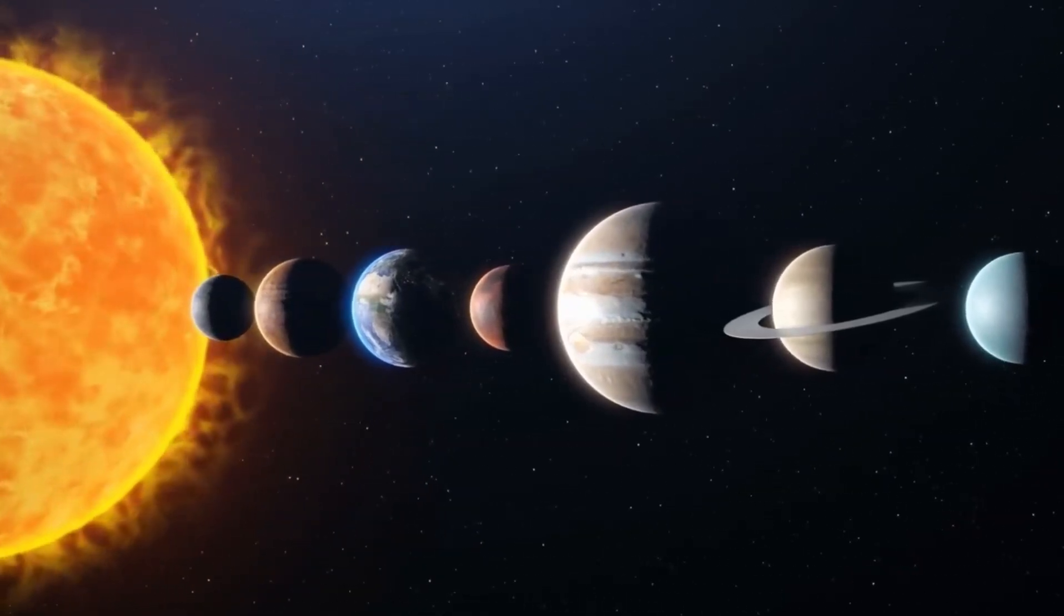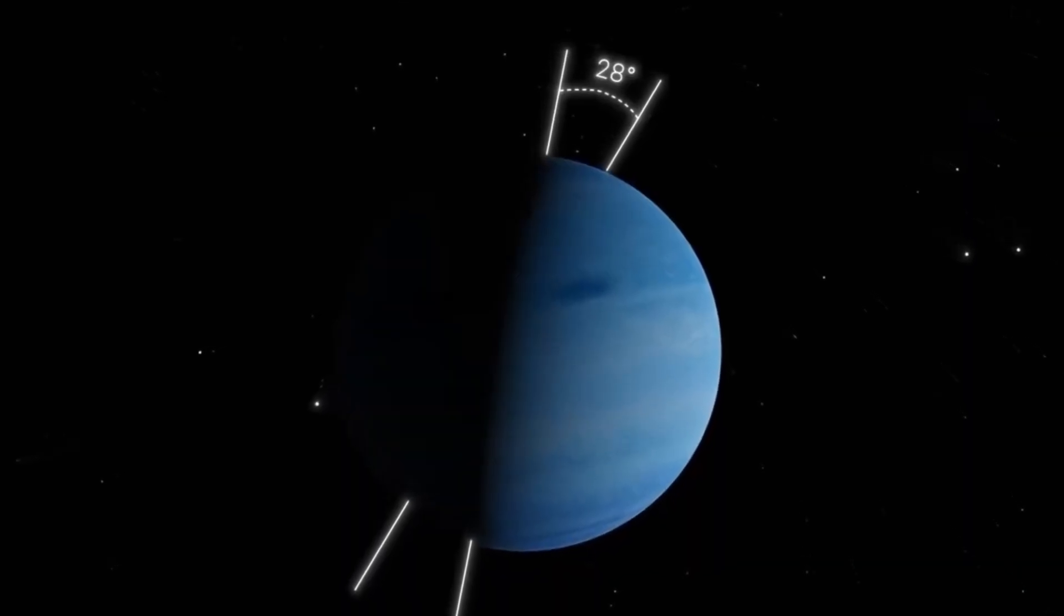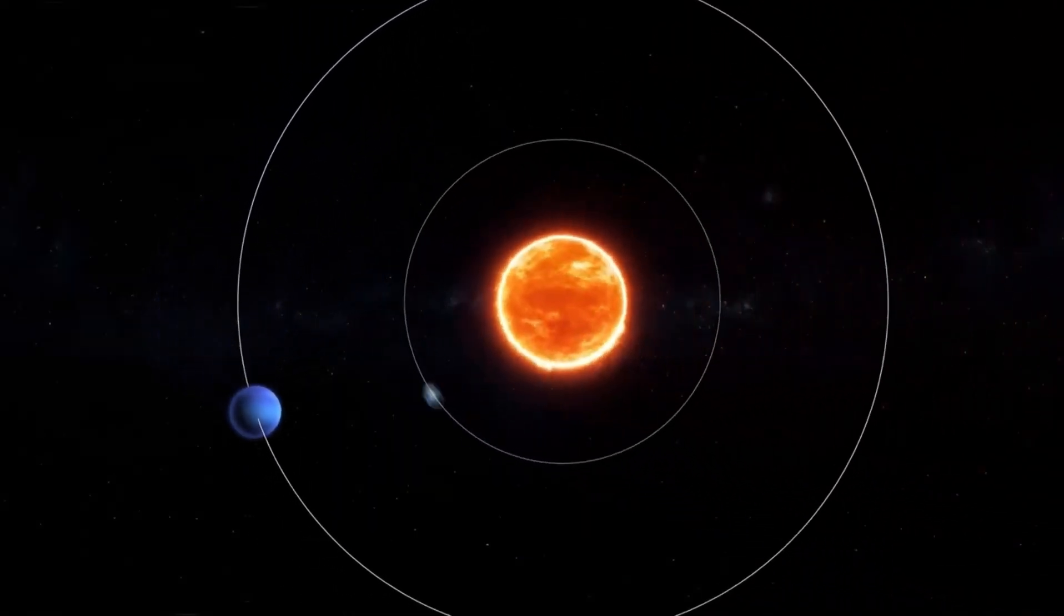In case you are wondering, the little blue dot is the Earth. In another photo, you can even see the Earth's Moon.